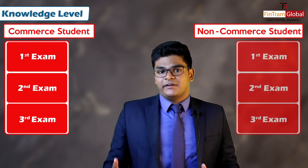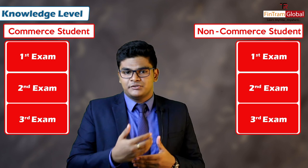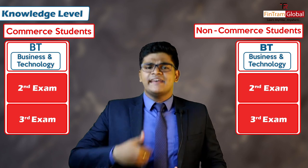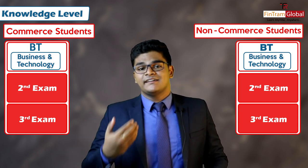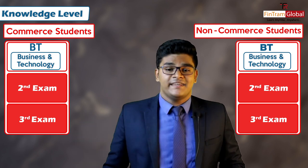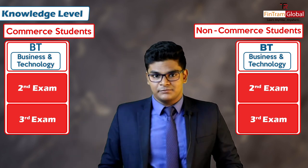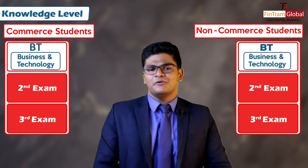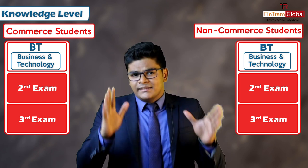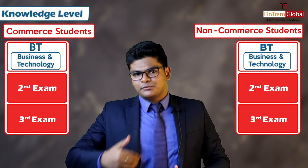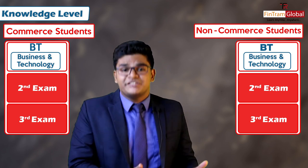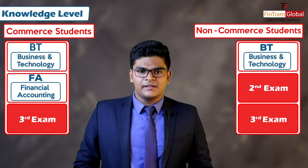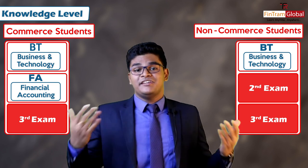The first paper that both categories can pick up is, of course, the BT or Business and Technology paper. It covers the basics of how business works and technological updates needed to move through all the other papers. It's also easier compared to the others. Now, after BT, this is where the difference comes in. For a commerce student, I would suggest taking up the Financial Accounting paper next, because journals, ledgers, and financial statements are something they are already used to, making it easier to grasp.